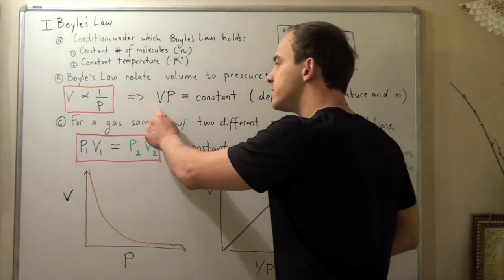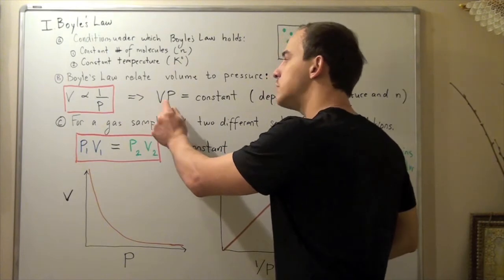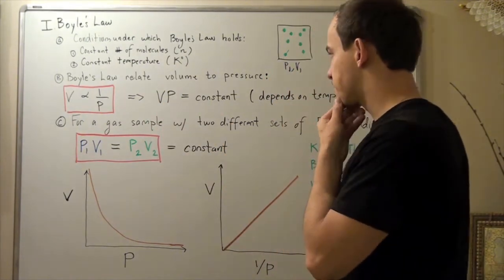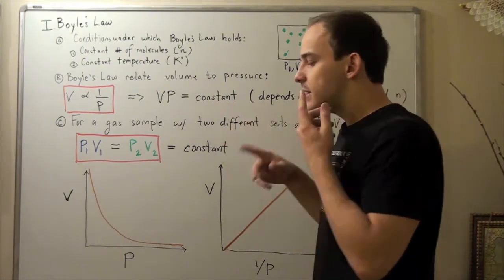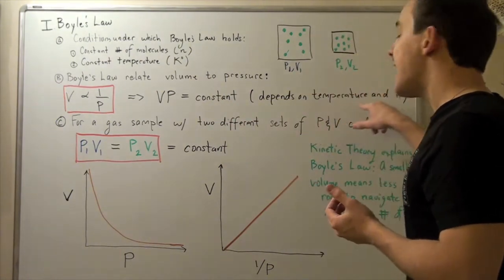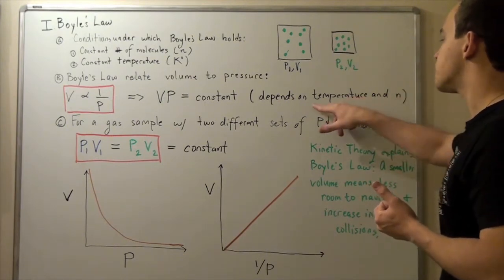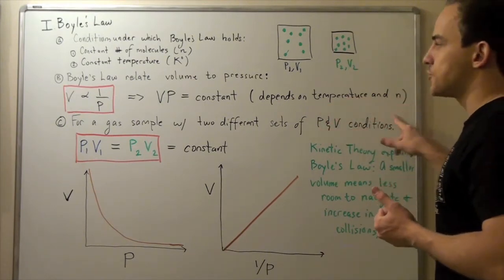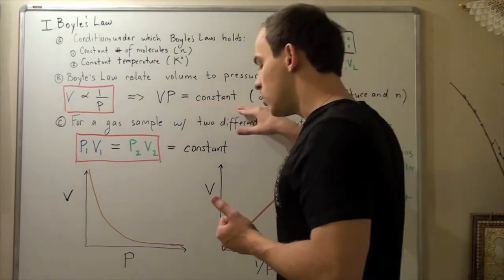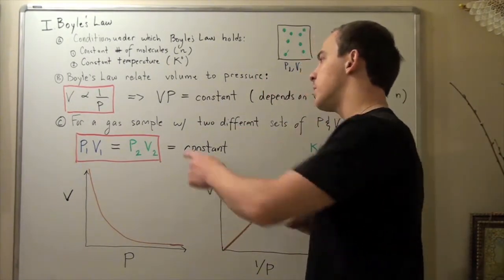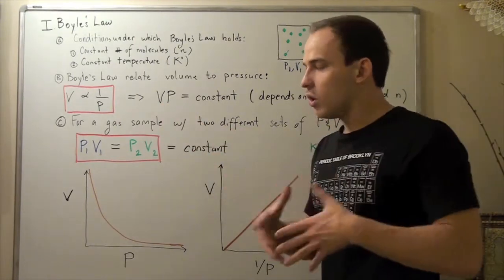So when V increases, P decreases. Or when P increases, V decreases. And so on. And our constant depends on the temperature and the number of moles. So if the temperature increases, or if temperature changes, or n changes, this constant will also change. In other words, the number that you get when you multiply V times P will also change.